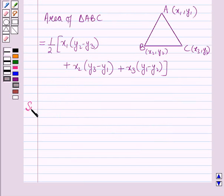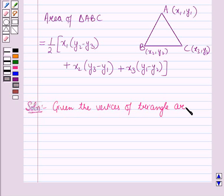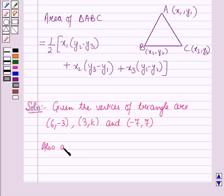Now we will start with the solution. Given the vertices of the triangle are (6, -3), (3, k) and (-7, 7), also the area of the triangle is equal to 15 square units.